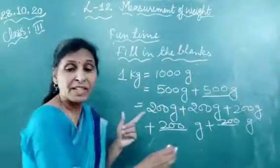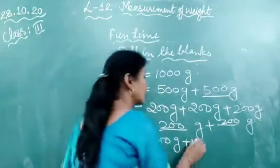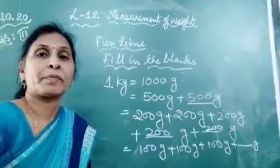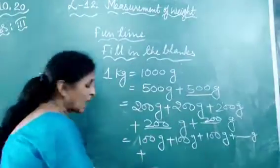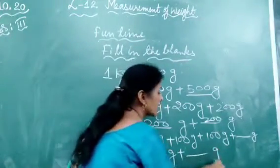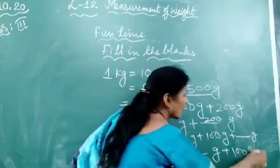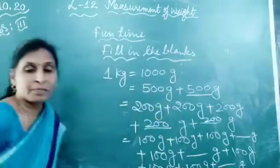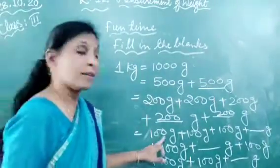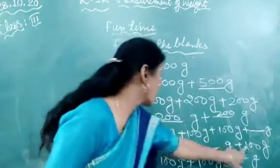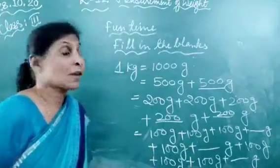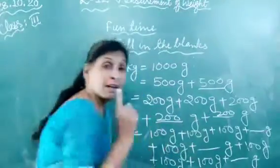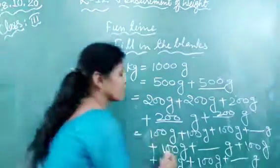Next: 100 gram plus 100 gram plus 100 gram plus blank gram plus 100 gram plus blank gram plus 100 gram plus 100 gram. How many hundreds are given? 1, 2, 3, 4, 5, 6, 7 — seven hundred grams are given, and 3 blanks to fill.